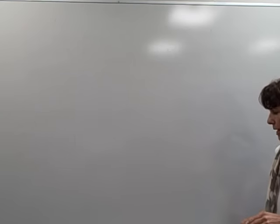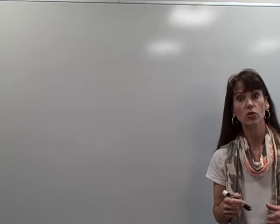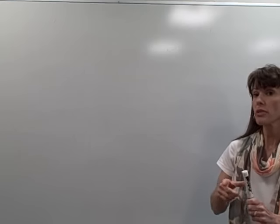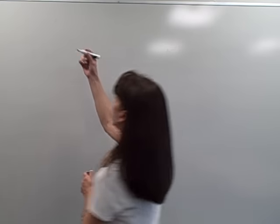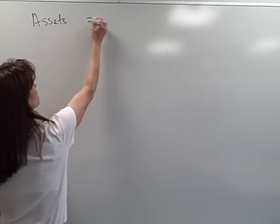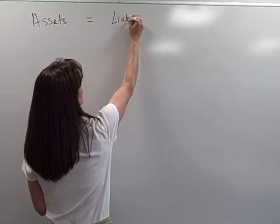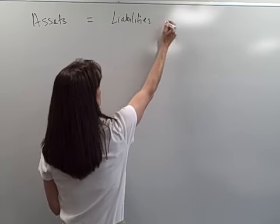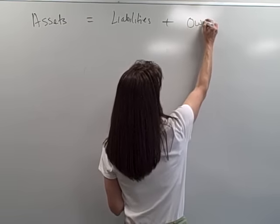When we first started out, we learned how to record business transactions using our accounting equation. Remember the accounting equation says that our assets equal our liabilities plus our owner's equity.